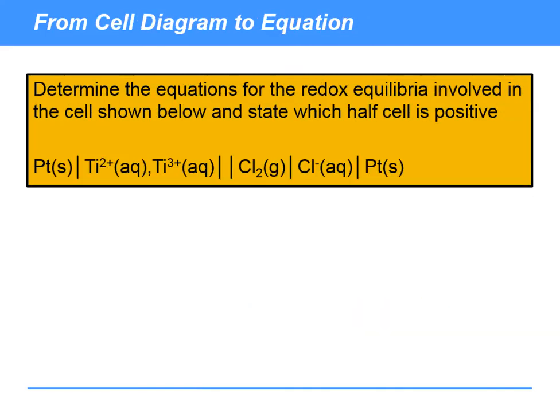Another example for you to try, this time going from the cell diagram to the equation. So have a read of that and pause the video and see if you can work out the various equations. Here we can see that by convention we'd have the positive electrode on the right-hand side and the negative electrode on the left-hand side.